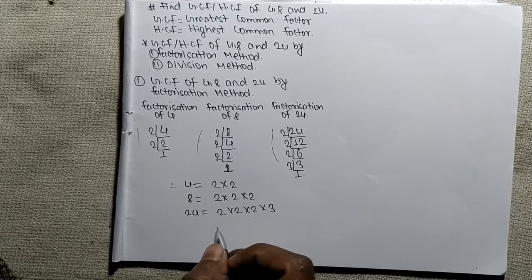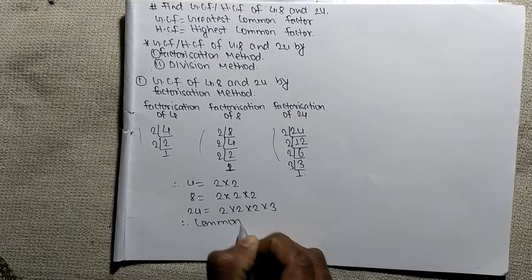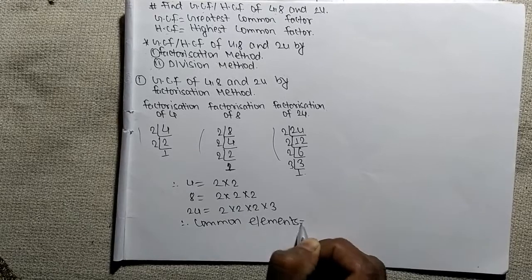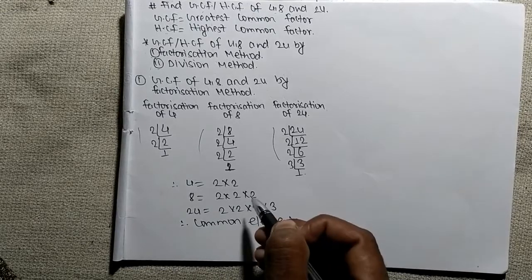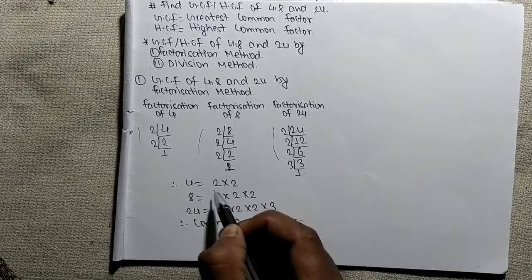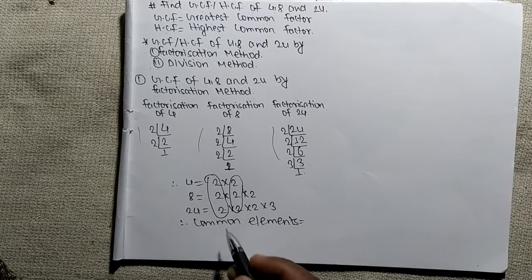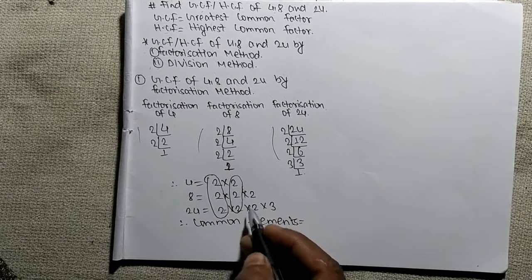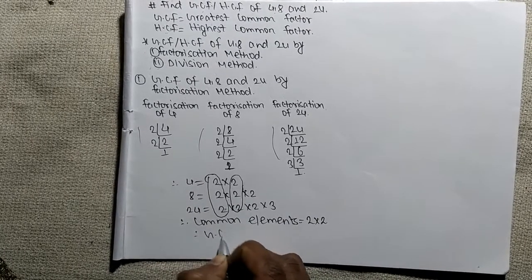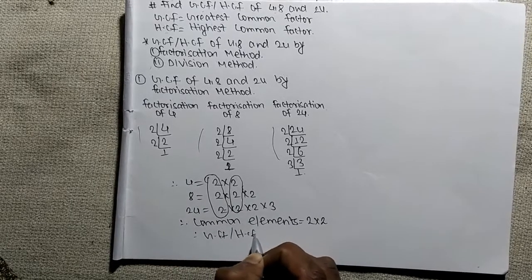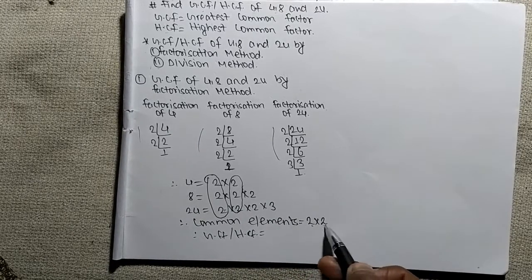After finding out the factorized elements, we have to find out the common elements. Let's find out what are the common elements in all three prime factorizations. Here, 2 is common in all three numbers, and another 2 is also present in all three prime factors. So 2 and 2 are the common elements in all three numbers.